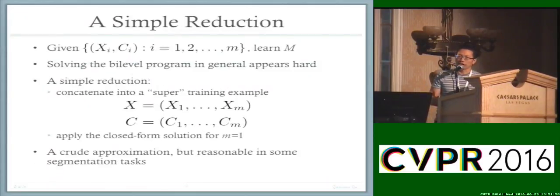So the general question is, when we have more than one training example, can we still solve the bilevel formulation? In general, it's very hard to solve exactly. What we did is use a very simple reduction scheme: we concatenate all training examples into a so-called super training example, then apply the closed-form solution. This is only a crude approximation, but as we show in experiments, it's actually quite reasonable in a number of applications.